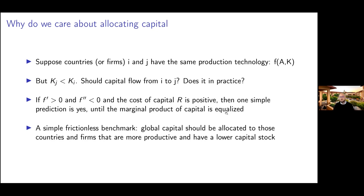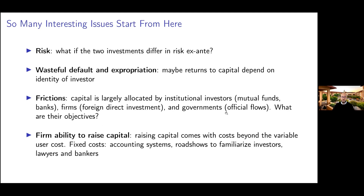Under mild conditions on the production function, the classic neoclassical prediction is yes — capital should flow until the marginal product of capital is equalized. This frictionless benchmark was put forward most prominently in international economics by Lucas, who said we should expect capital to flow from very rich countries with high capital stocks to emerging markets that might have a lower capital stock and high marginal product of capital. The fact that this doesn't happen in practice has stimulated all sorts of research over time.